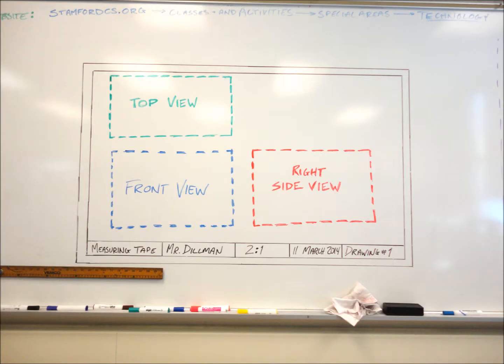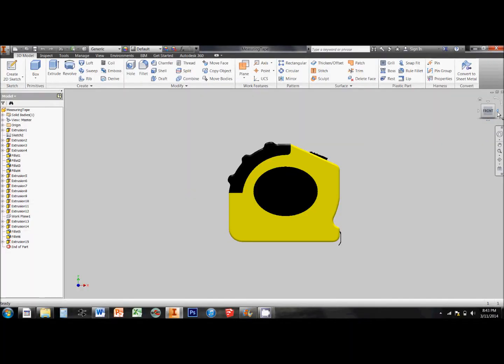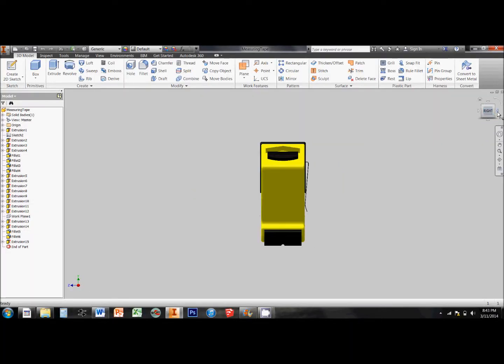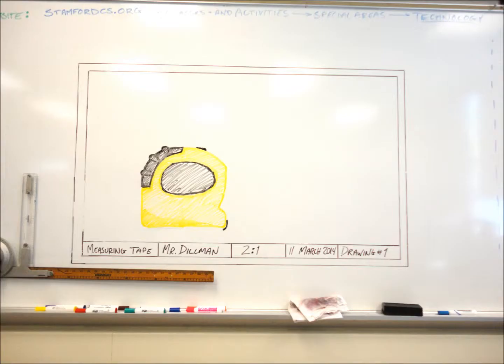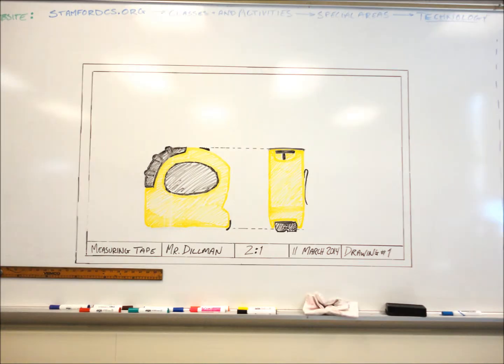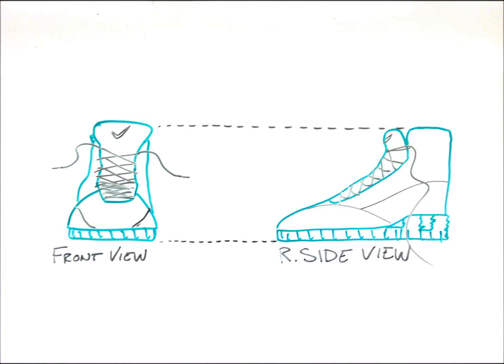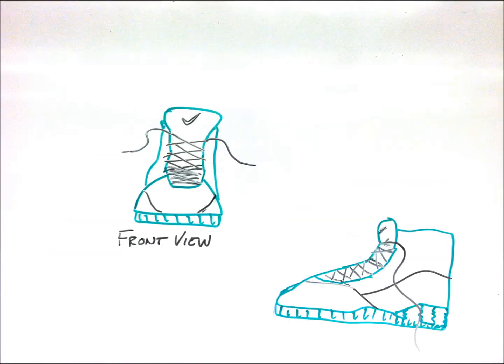And the right side view should appear to the right of the front view, as if we rotated the front view to see the right side. Everything in an orthographic drawing is based off the front view, so the right side view and the top view should line up with the front view exactly. They should not be randomly placed on the page.